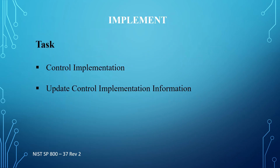There are two tasks that fall under the implement step of the NIST Risk Management Framework. The first task is control implementation, where the security controls selected from NIST 853 Rev4 and documented in the system security plan are implemented, and the implementation statements are also documented in the SSP. The second task is updating the control implementation information, where changes to planned control implementation based on the as-implemented states of the controls are documented in the system security plan.